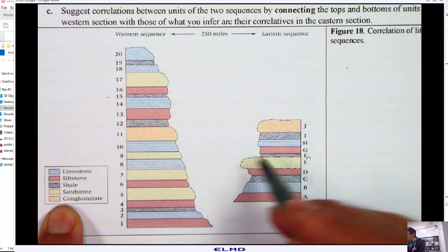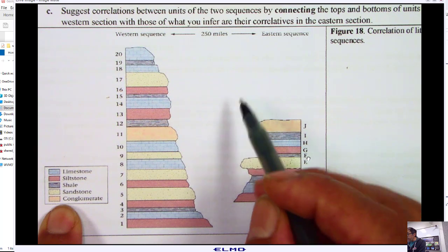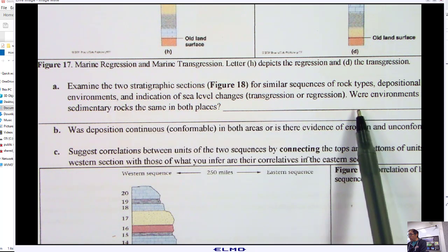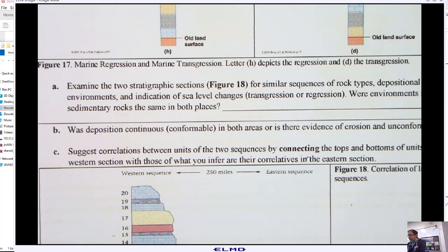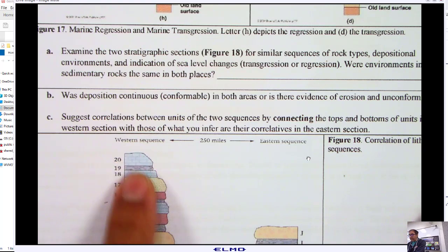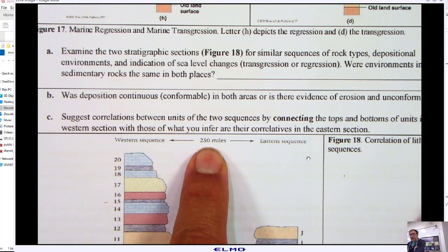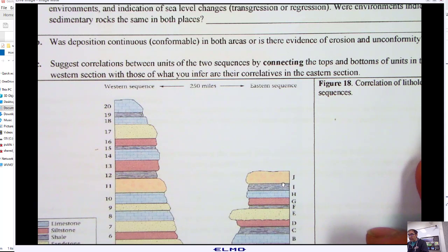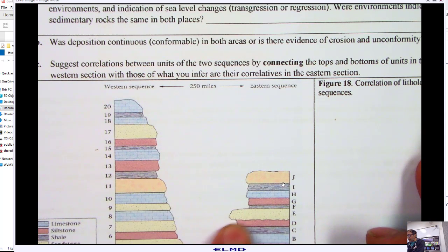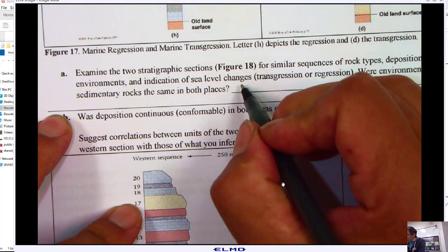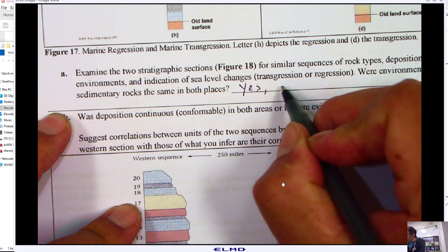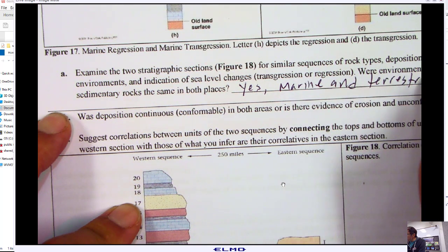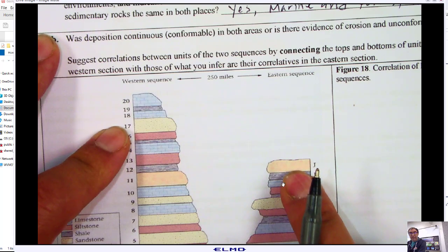If we look at figure 18, which is down over here, we want to examine what's going on. You can see that conglomerate is here. We examine the two sections for similar sequences of rock types and environments. Were environments indicated by sedimentary rocks the same? This is western sequence, and this is eastern sequence. They're separated by 250 miles. You can see in the western sequence we see more limestones. We do see conglomerates on both sides and sandstones on both sides. So yes, we'll say yes, marine and terrestrial.